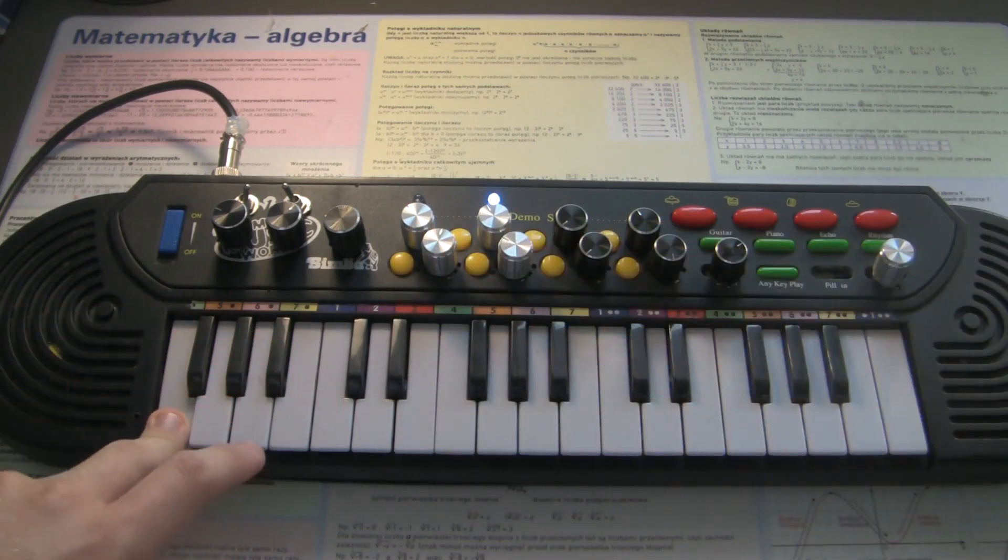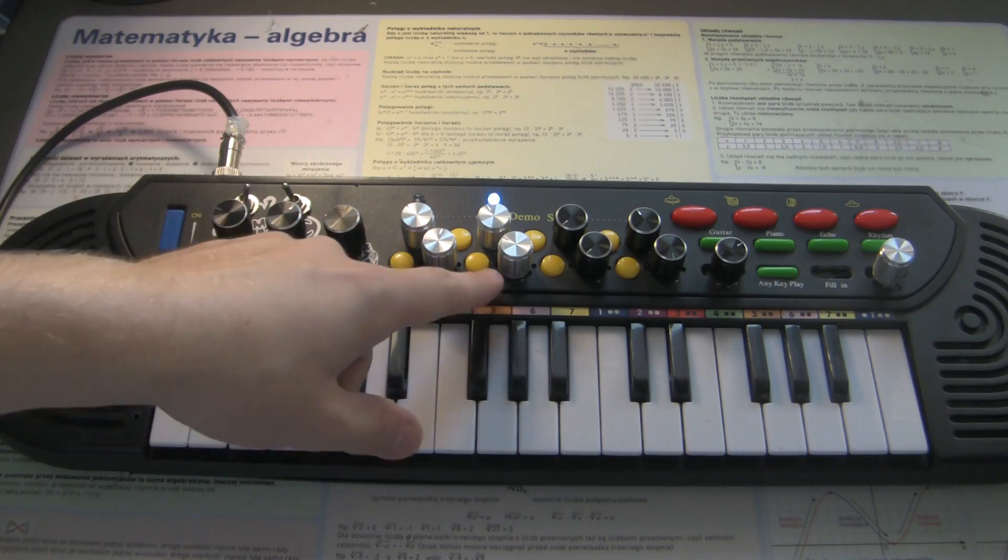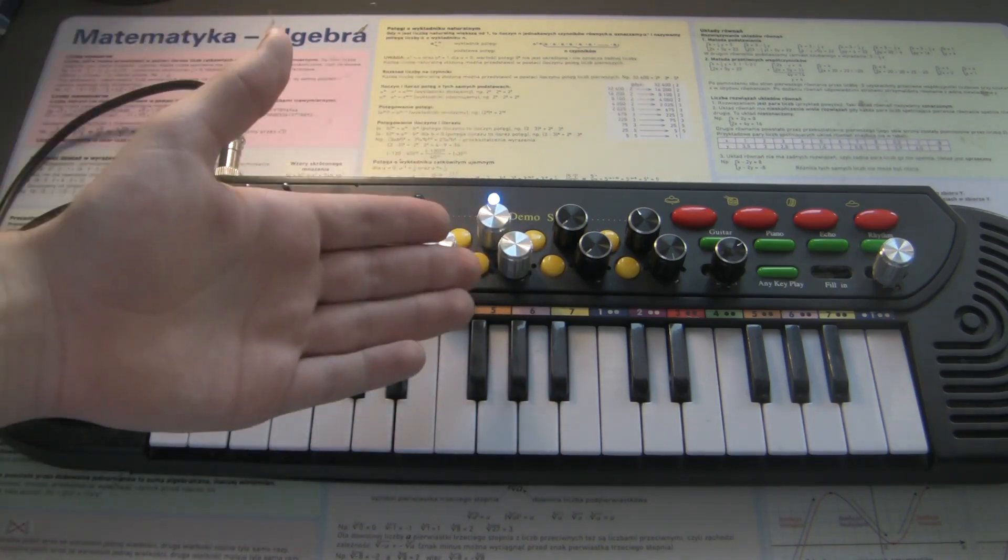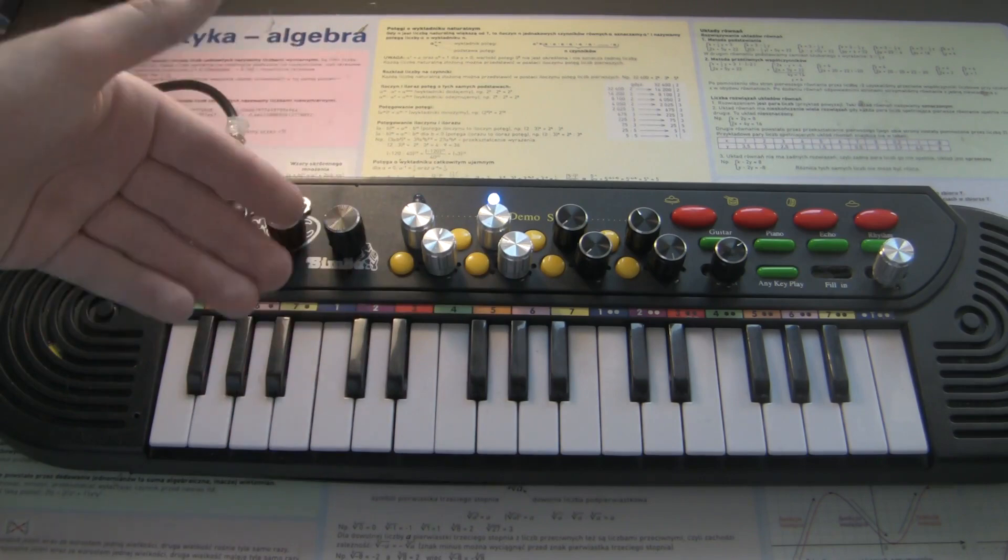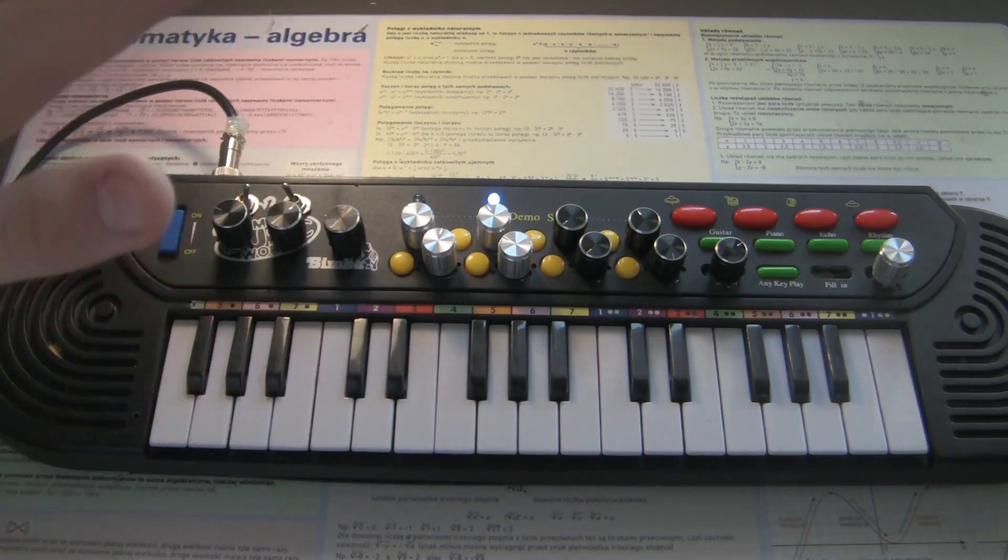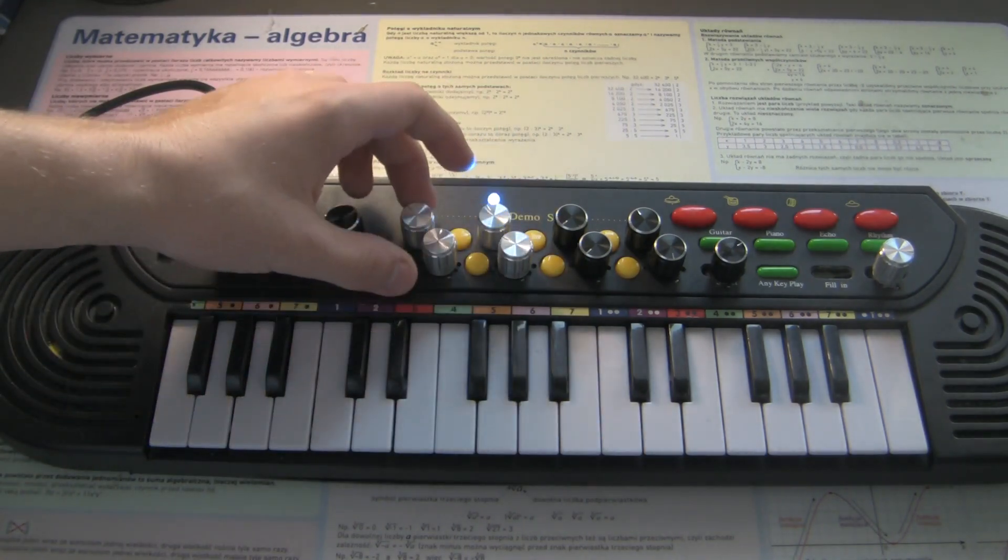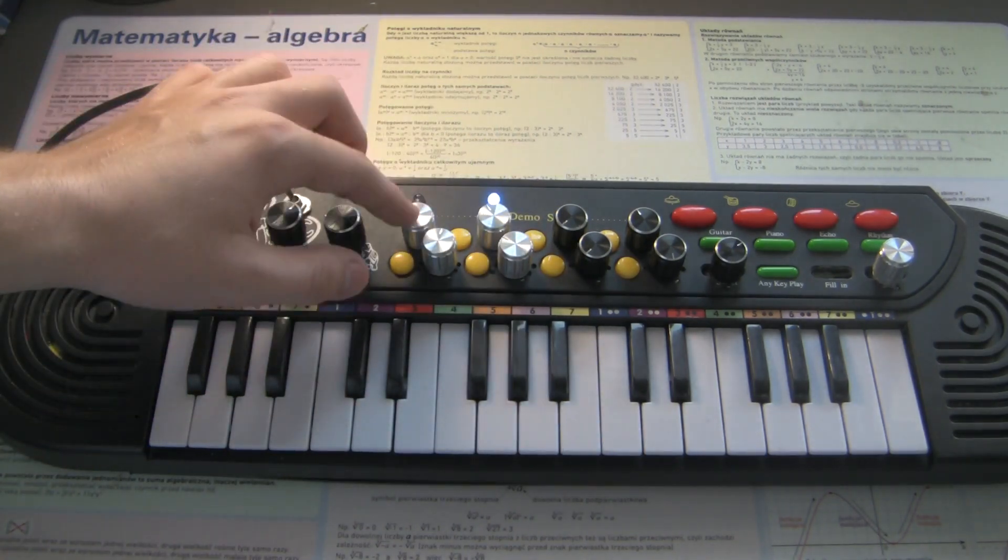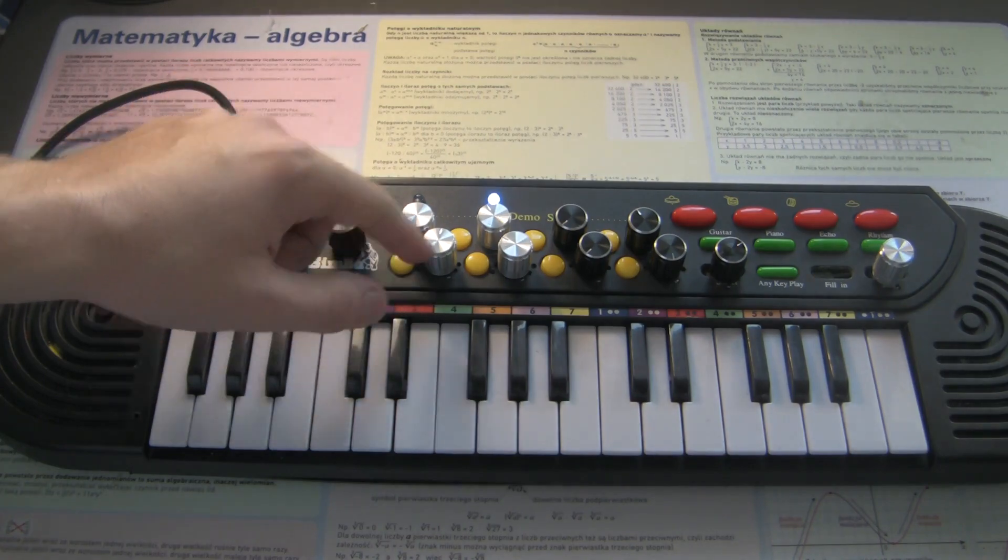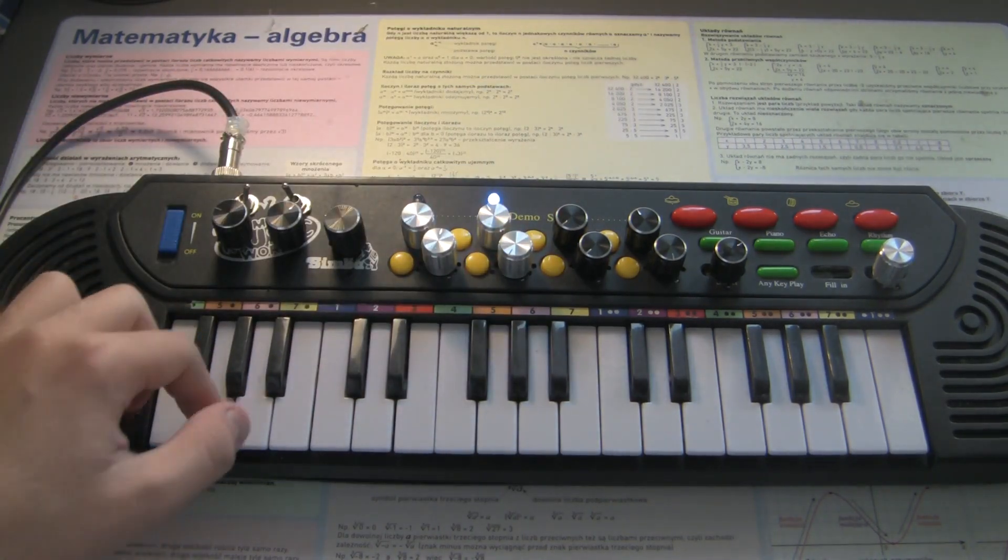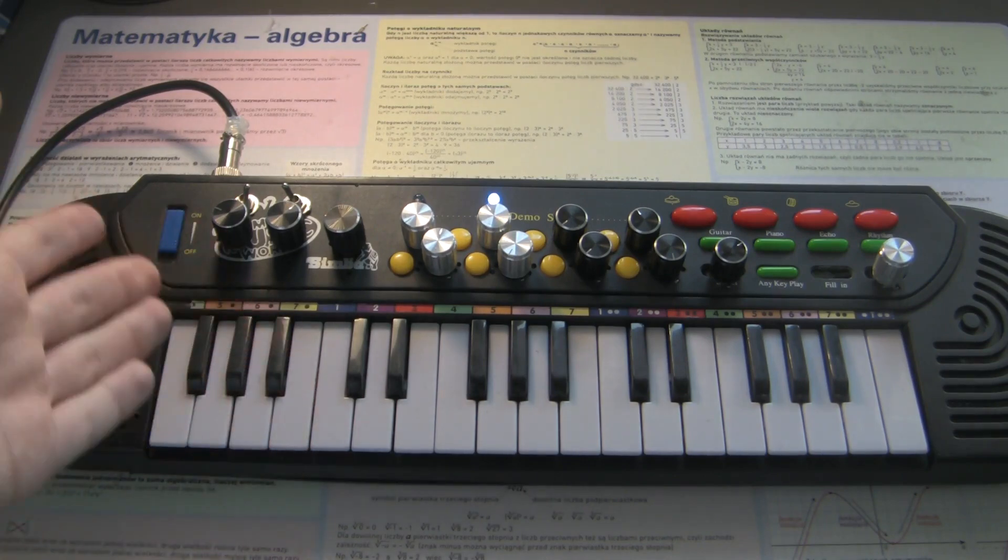So now we are on the third one, sustain. And when I release the key, the last section will start, which is release. And this sets the time of how long do you want for the note to slowly decay to basically zero volume. And to turn any of these settings off, for example if we don't want the attack, we can just set it to zero. Same with release. And now the note will sound like this.